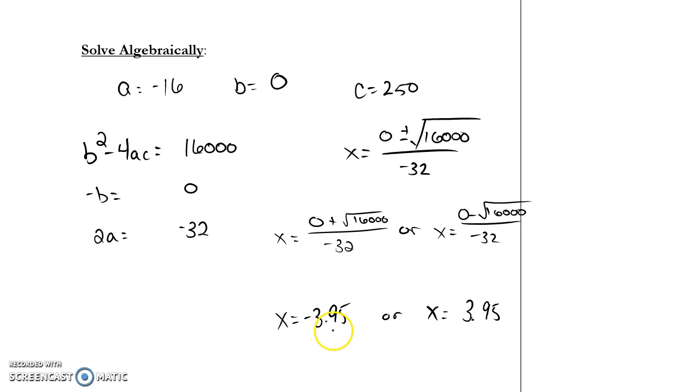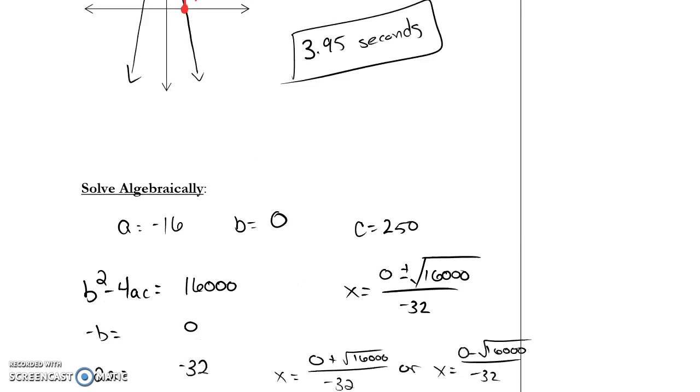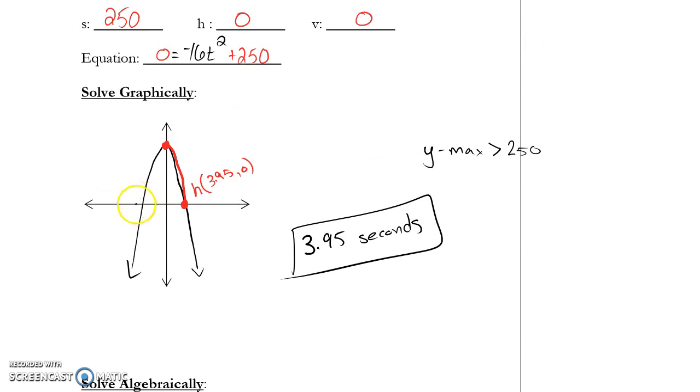So once again, we find X is negative or positive. In this case, both of them are 3.95, the only actual possible solution is the positive. We can't go back in time. X is time in our vertical motion model. We cannot go backwards in time. That negative 3.95 represented this intersection. That's not the interval we're focused on.